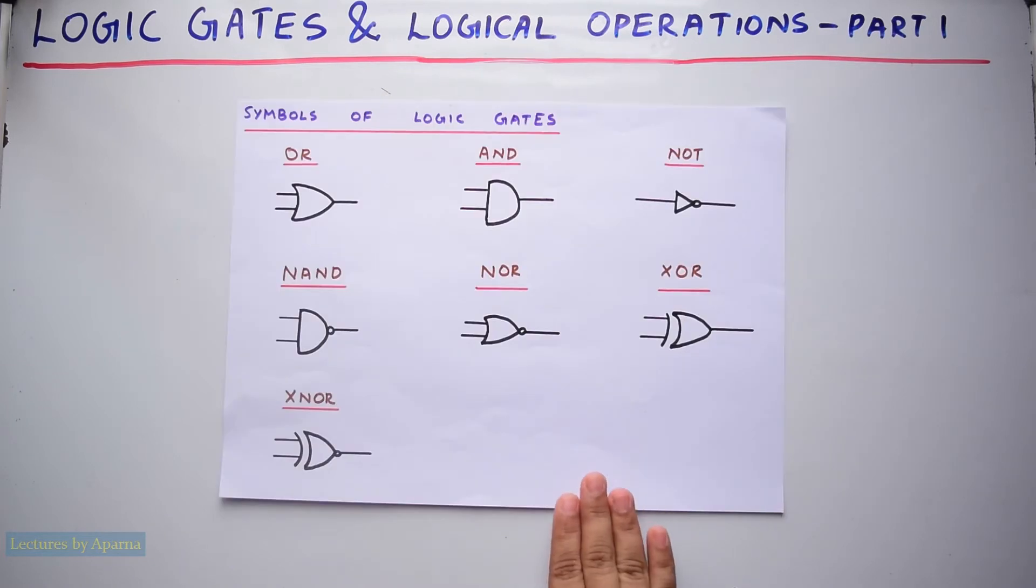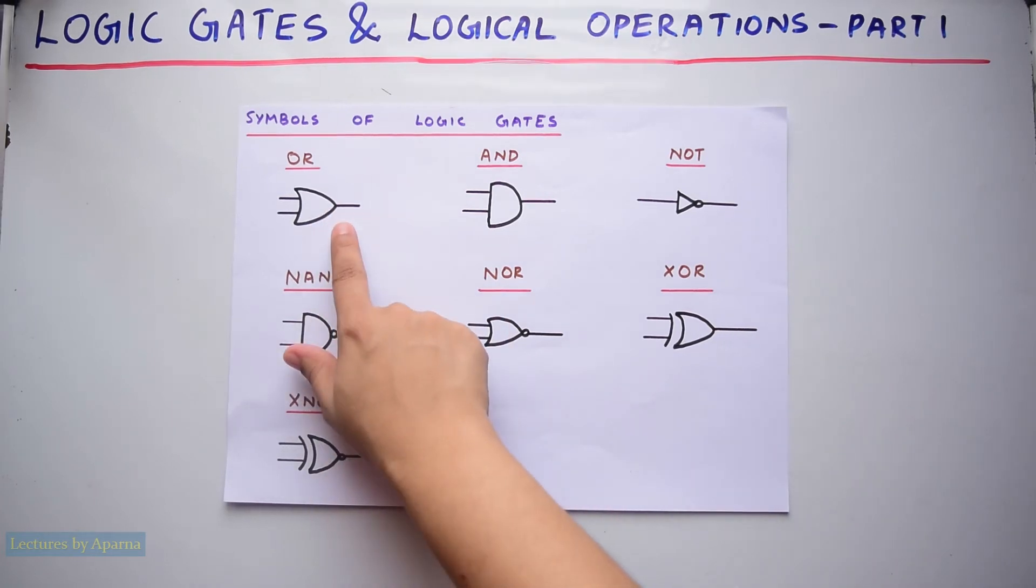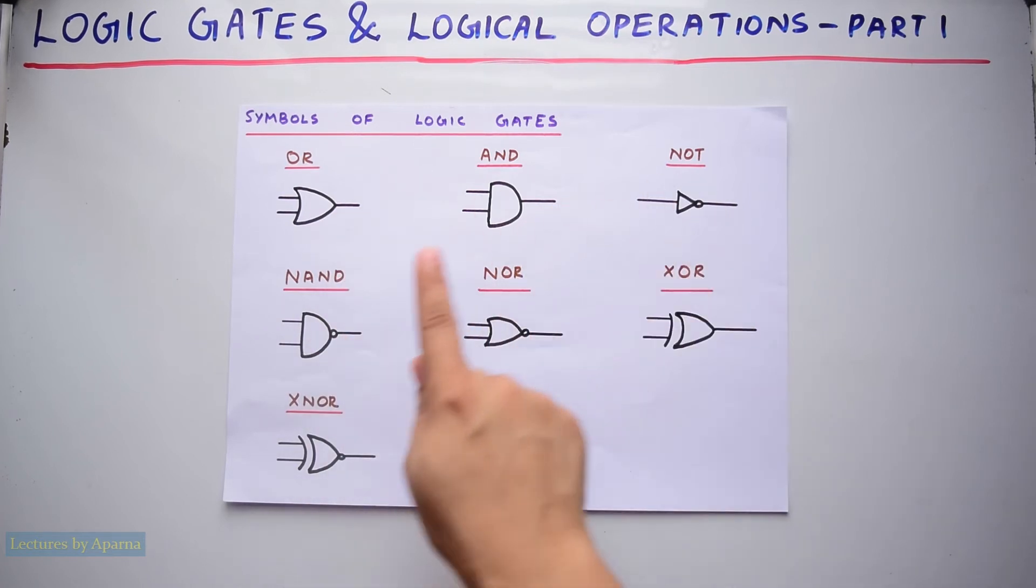These are the symbolic representations of each logic gate. Each logic gate performs a different logical operation. This is OR gate, this is AND gate, NAND gate, NOT gate, XOR gate, and XNOR gate. These are just symbols for logic gates.